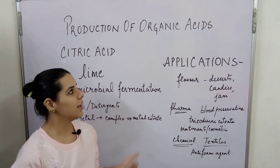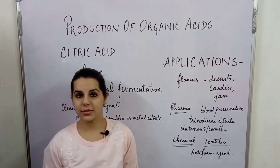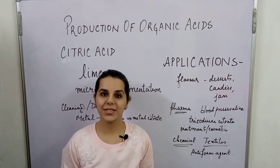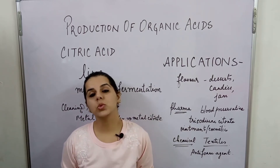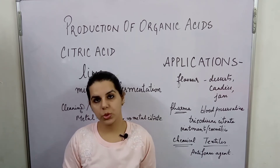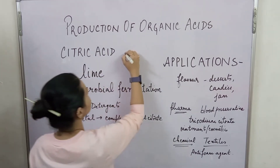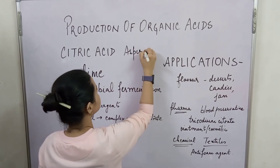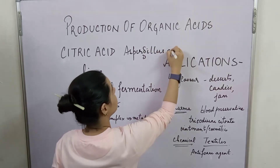Now let's talk about what microorganisms are used for citric acid production. The first and most important microorganism being used is Aspergillus niger. Aspergillus niger is the primary organism used in fermentation for citric acid production.